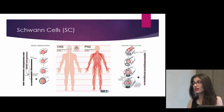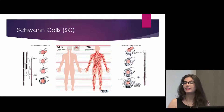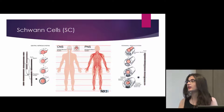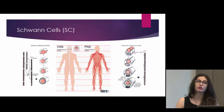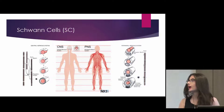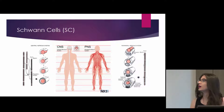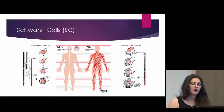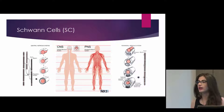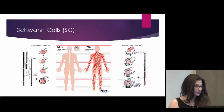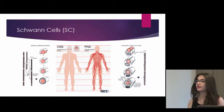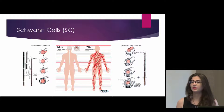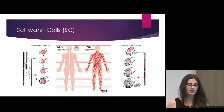There are two different types of cells that myelinate in our bodies. There are oligodendrocytes, which are found in the central nervous system and the spinal cord, and there are Schwann cells, which are found in the peripheral nervous system. Schwann cells myelinate one axon per cell, and they extend tendrils called processes that wrap around the axon and perform myelination.